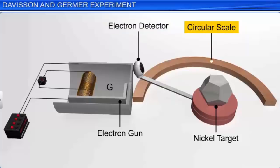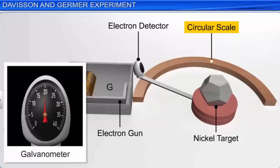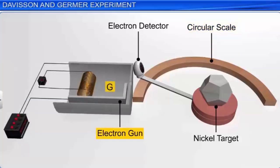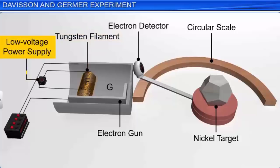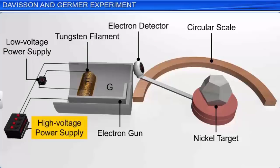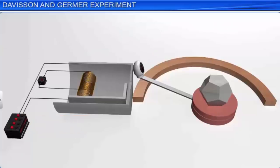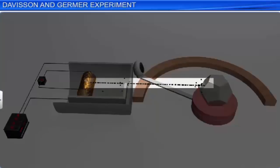The electron detector is connected to a sensitive galvanometer used to measure current. The electron gun G is used to produce a beam of electrons. The electron gun constitutes a tungsten filament F coated with barium oxide, and can be heated with a low voltage power supply. Electrons are emitted by the filament and are accelerated at a desired velocity by applying a suitable voltage from a high voltage power supply.